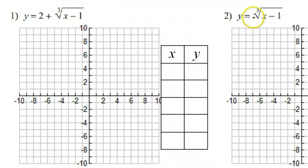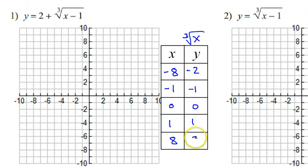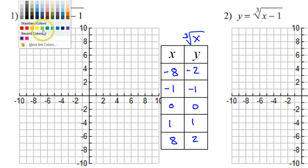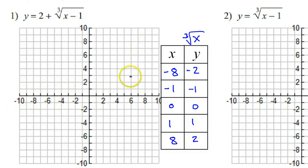All of the other functions are transformations of the parent function, so we will start by graphing the parent function — cube root of x — every single time. We will always use the x values negative 8, negative 1, 0, 1, and 8, whose cube roots give us negative 2, negative 1, 0, 1, and 2. If there were an a value, I would add a third column and apply it. But since there's not, let's graph the parent function as a skeleton — do not connect the points.